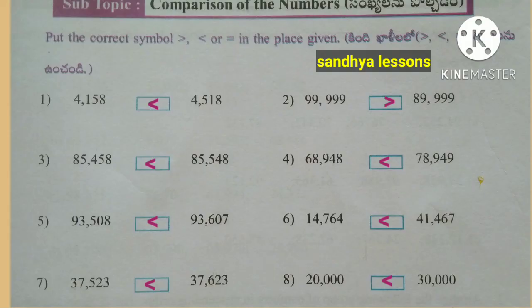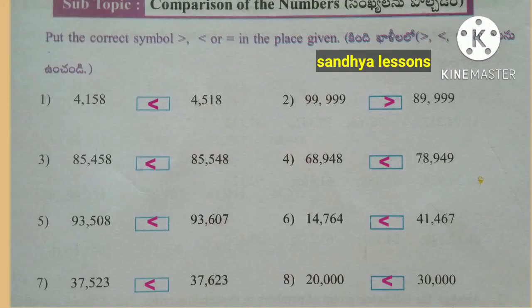4158 is less than 4518. 99999 is greater than 89999. 85458 is less than 85548. 68948 is less than 78949. 93508 is less than 93607. 14764 is less than 41467.